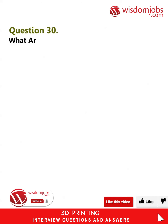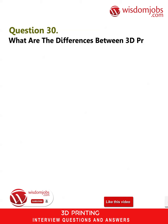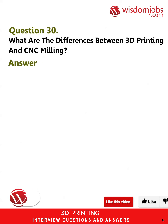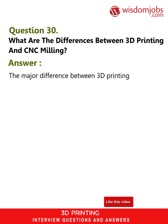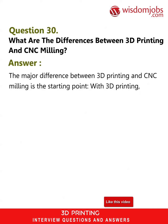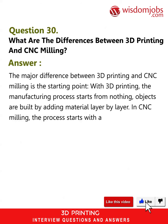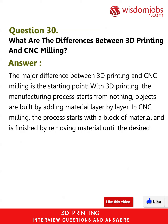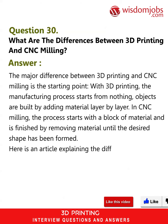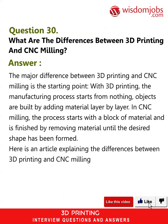Question 30: What are the differences between 3D printing and CNC milling? Answer: The major difference between 3D printing and CNC milling is the starting point. With 3D printing, the manufacturing process starts from nothing — objects are built by adding material layer by layer. In CNC milling, the process starts with a block of material and is finished by removing material until the desired shape has been formed. Here is an article explaining the differences between 3D printing and CNC milling.